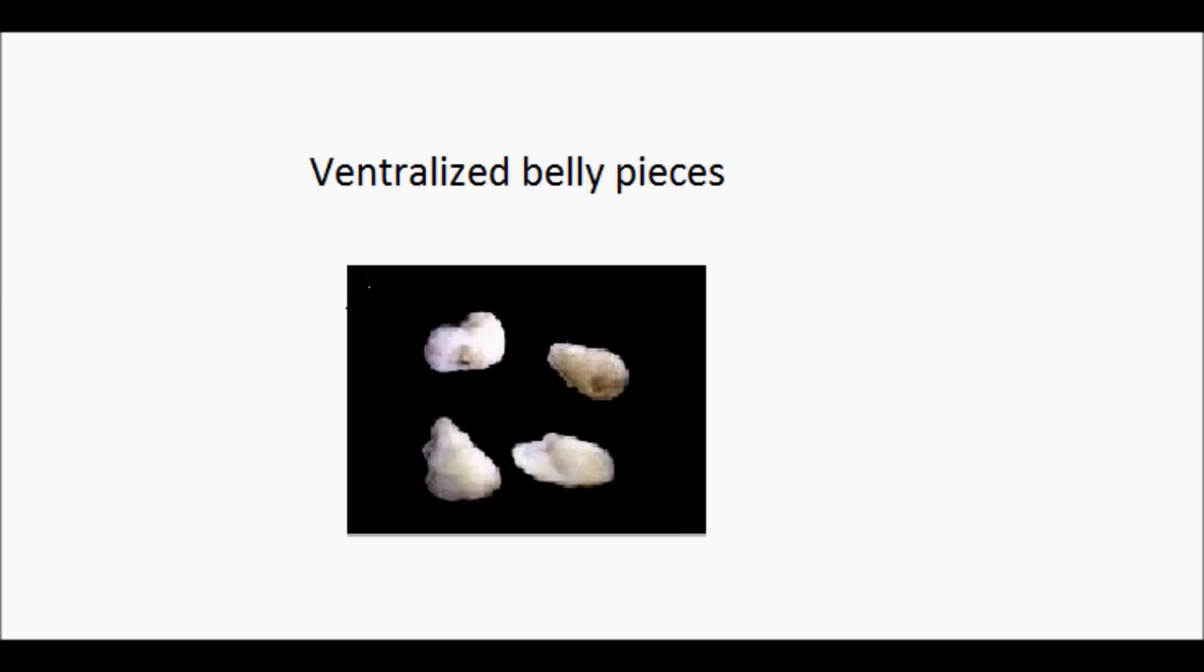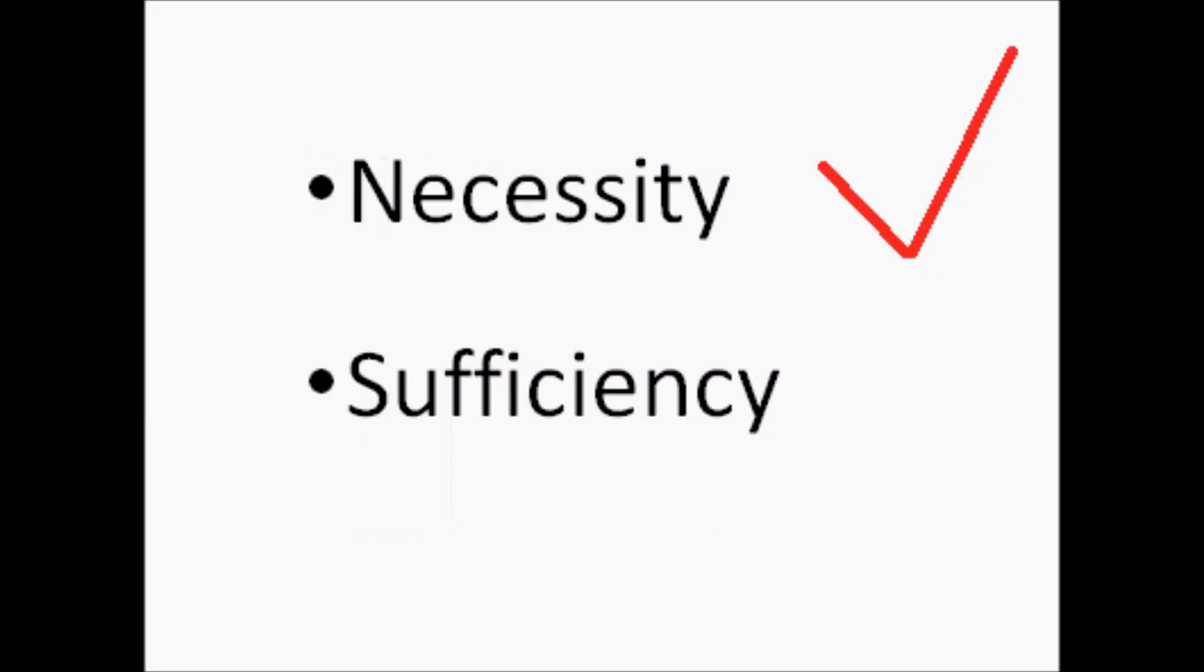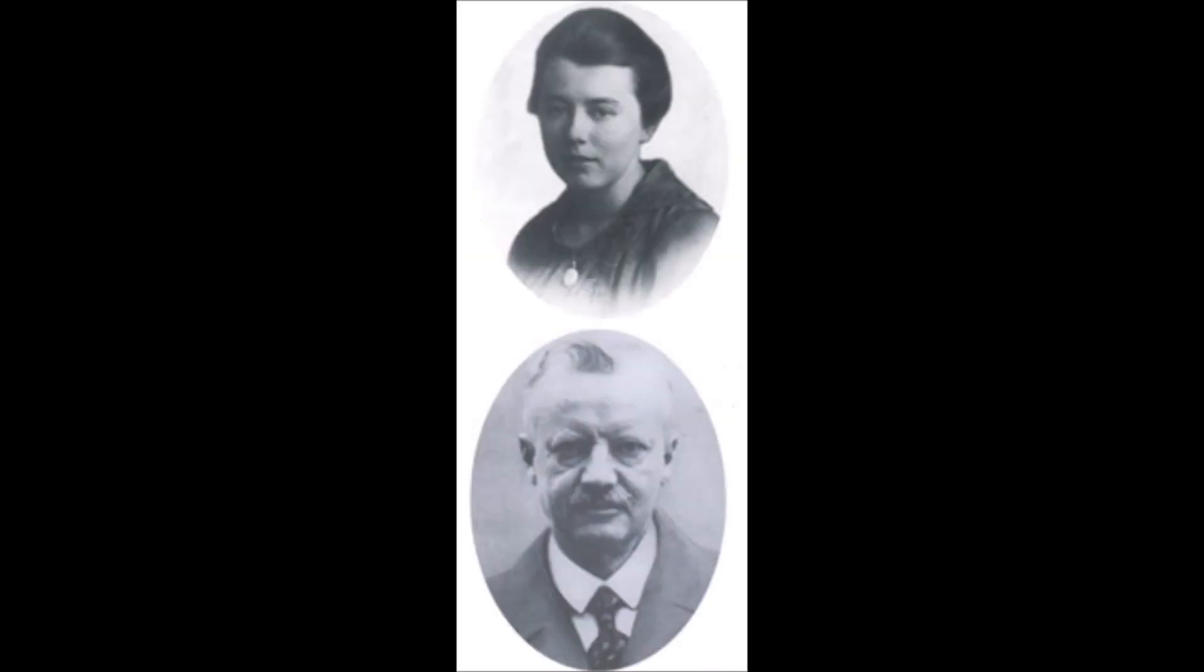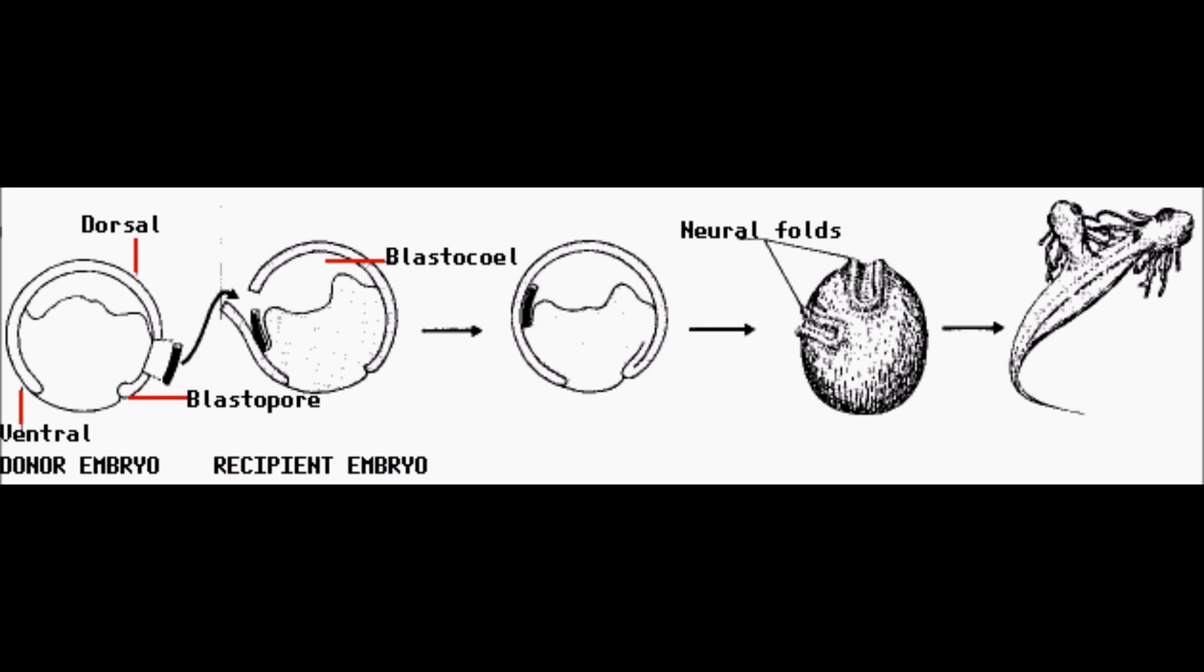Taking the organizer out causes the embryo to be ventralized. The Spemann and Mangold experiment in 1924 showed sufficiency of the organizer for dorsalization. They did this by taking the organizer from a donor embryo and transplanting it to another. The result is a conjoined twin embryo.